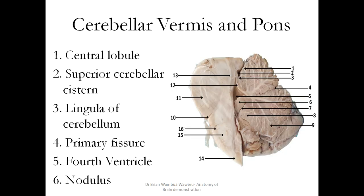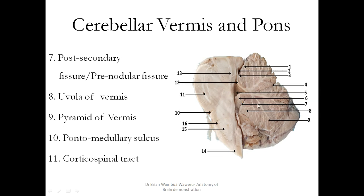Looking at the cerebellar vermis and the pons in a sagittal section — cut in the sagittal plane — level 1 is the central lobule. You can appreciate the superior cerebellar cistern. This is the inferior colliculus, and below it is the superior cerebellar cistern, which houses cerebrospinal fluid. Level 3 is the lingula of the cerebellum, then the primary fissure, then the fourth ventricle, and then the nodules of the vermis.